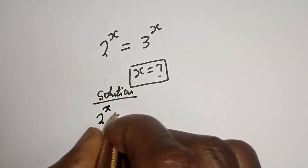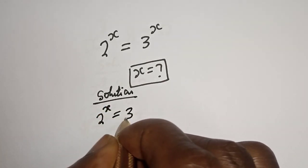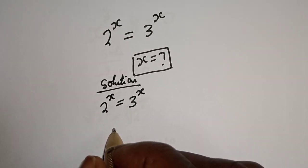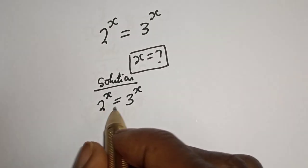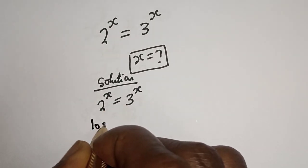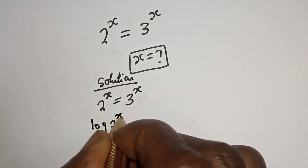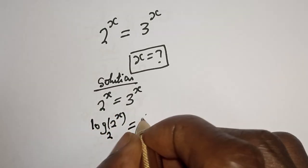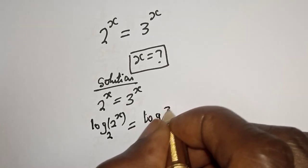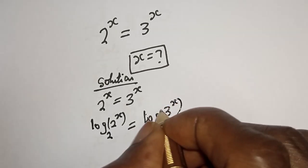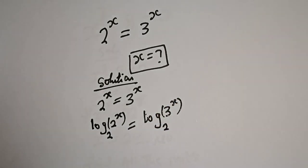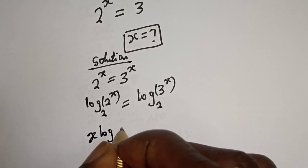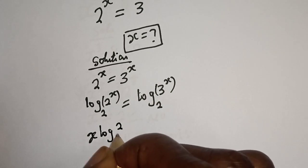2 raised to power s is equal to 3 raised to power s. Let's take the log of both sides and make it base 2. Then log of 2 raised to power s base 2 is equal to log of 3 raised to power s base 2, and s log 2 base 2